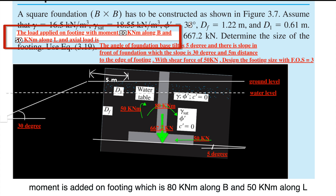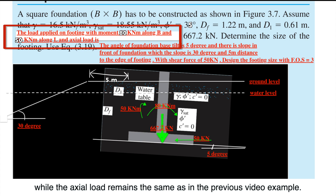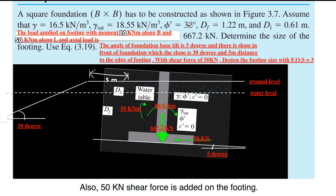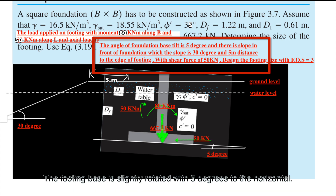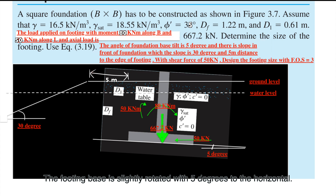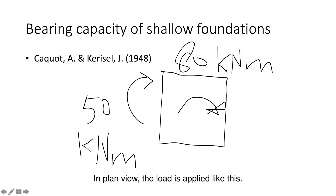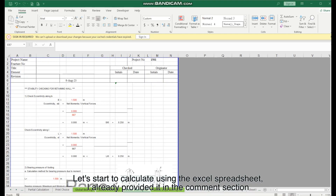First, a moment is added on the footing: 80 kN·m along B and 50 kN·m along L, while the axial load remains the same as in the previous video example. Also, a 50 kN shear force is added on the footing. There is also a 30-degree slope in front of the footing at 5m distance from the edge of the footing. The footing base is slightly rotated with 5 degrees to the horizontal. In plan view, the load is applied accordingly.